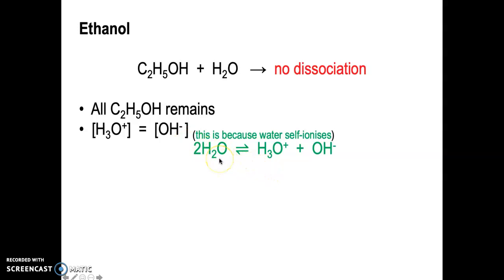This goes back to video 1 where I explained that water self-ionizes, but the concentration of hydronium ions is low: 1 times 10 to the minus 7, which is the same concentration for hydroxide ions. In an exam question, they might ask you to write all species present in order from highest to lowest concentration.